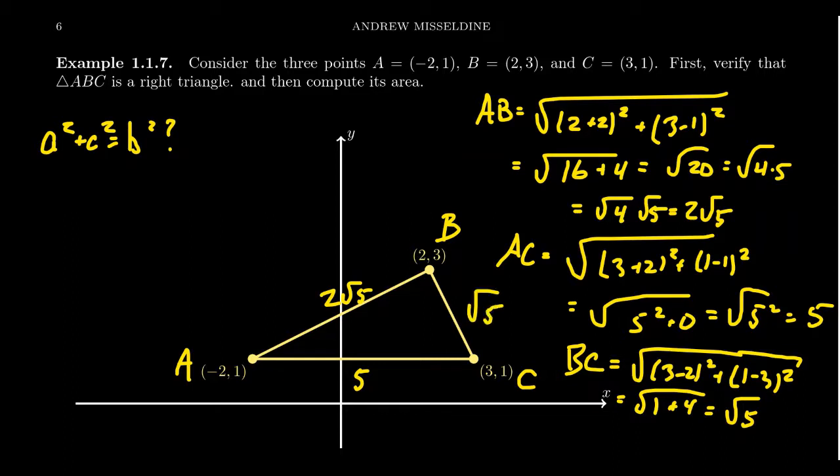So this distance right here is twice as long as this one right here. So now that we have these distances, now let's check the Pythagorean equation. So if we take 2 times the square root of 5 squared plus the square root of 5 squared, is that equal to 5 squared? Well, let's see that.